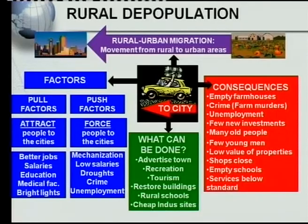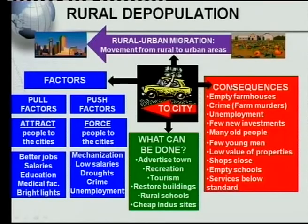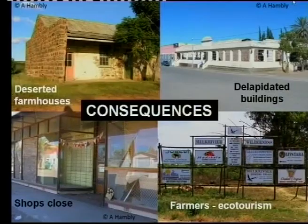So these are the four most important things. Firstly, you must know the definition of rural-urban migration. Secondly, you must know why it takes place. Thirdly, you must know the consequences of it. And fourthly, you must know what can be done to manage rural depopulation.